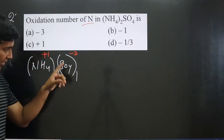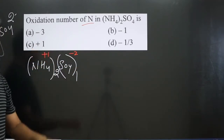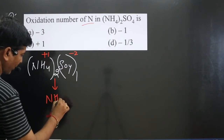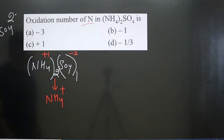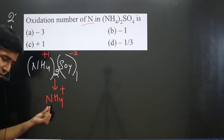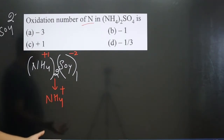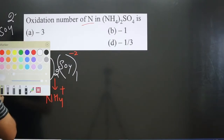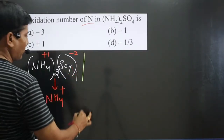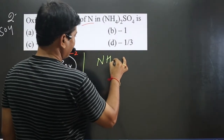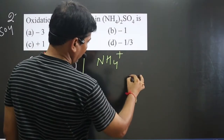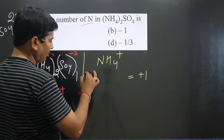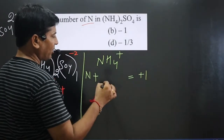From this we get the exact charges of the polyatomic ions. This is a cation having a positive charge, and this is an anion having a negative charge. We get the cation NH4+ with a positive charge. Now it is very easy to calculate the oxidation number of nitrogen. The ammonium ion NH4+ has a charge of plus one.